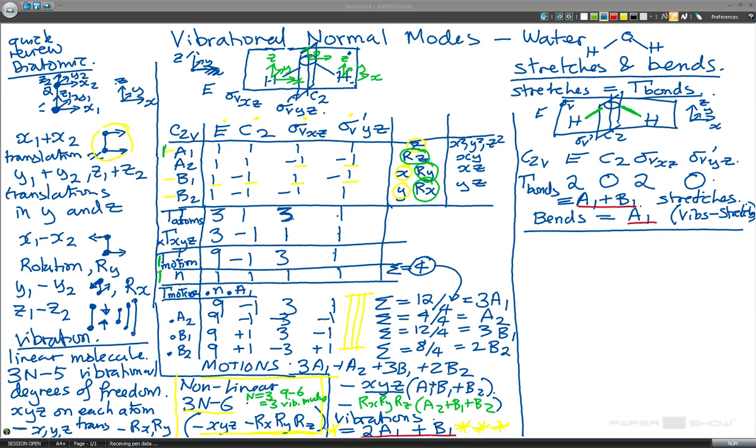We know which ones of them are bends, which ones are stretches. So the last thing we have to do is to think about IR and Raman activity. And what this is really is this is selection rules.